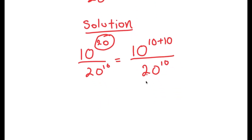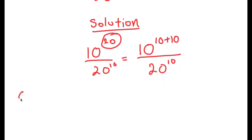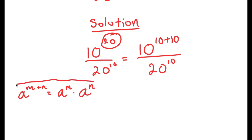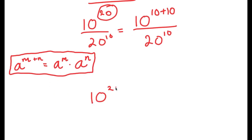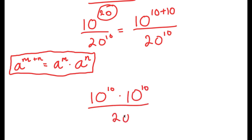The reason I did that is so I can use the property a to the power of m plus n is equal to a to the power of m times a to the power of n. This is an important property of exponents, and I'm going to use this on 10 to the power of 10 plus 10. This turns into 10 to the power of 10 times 10 to the power of 10, all over 20 to the power of 10.